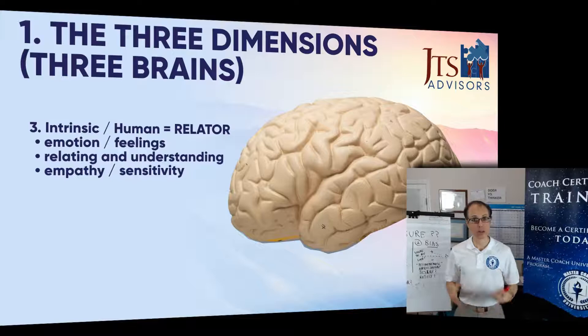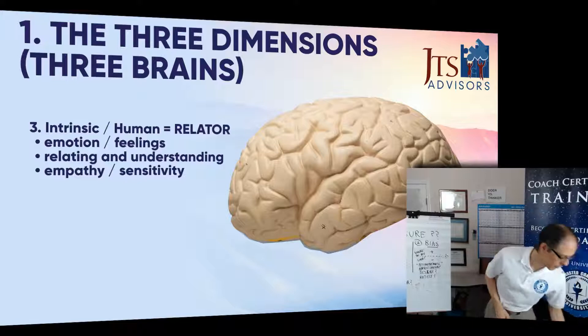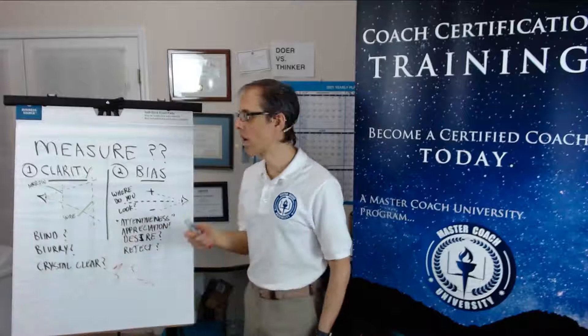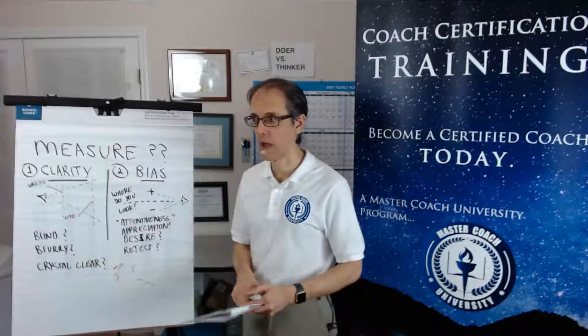You evaluate, decide, focus, feel, and experience all of life through those three different dimensions — those three lenses — and then put them all together. Now let's come back to how do we measure those dimensions. If those three dimensions are the thoughts we're measuring, what are the aspects of those thoughts that we actually measure? There are two of them. The first one is clarity.